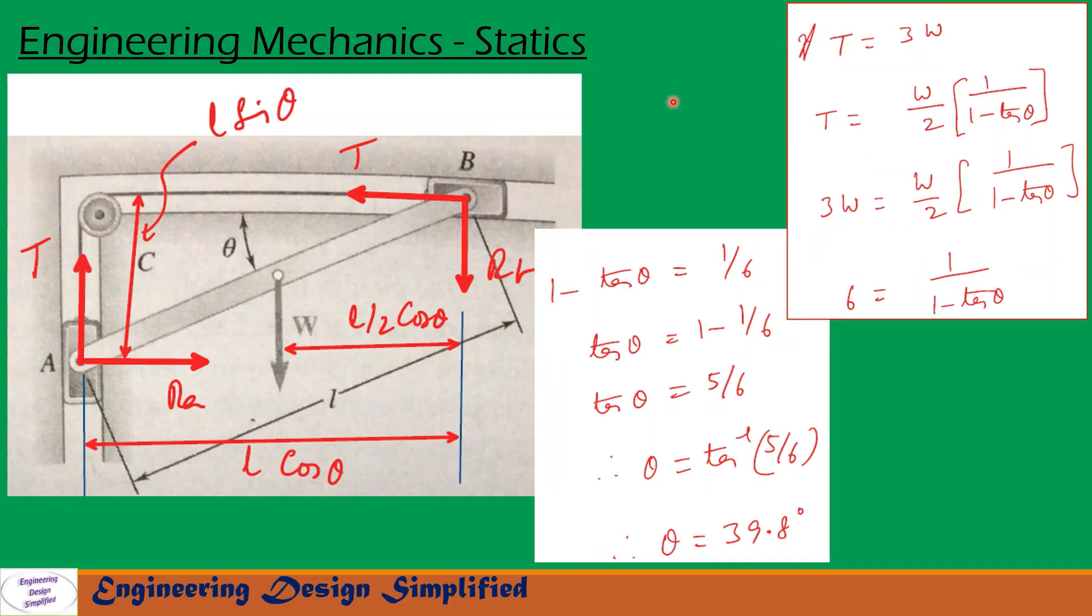The second portion of the problem is: if T = 3W, then what is theta? If we substitute T = 3W in the previously derived equation, T = W/2 × 1/(1 - tan theta), we get theta = 39.8 degrees.